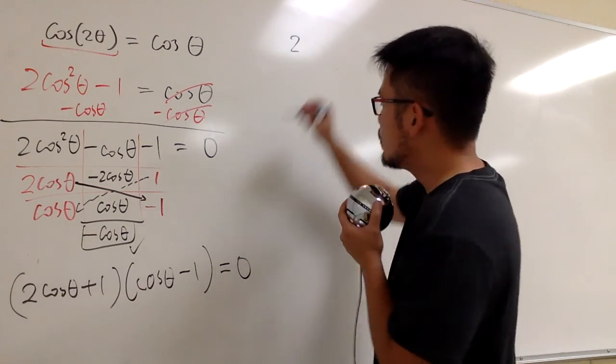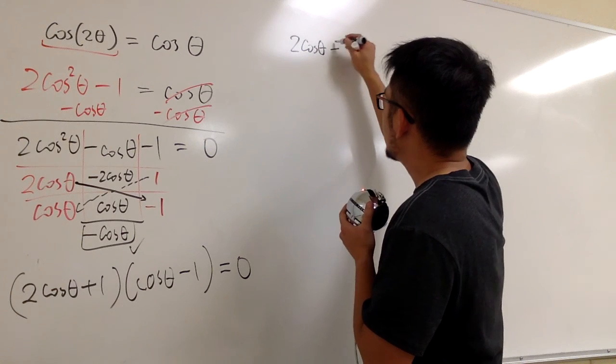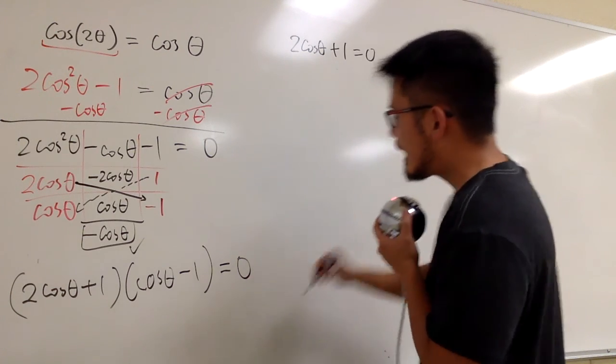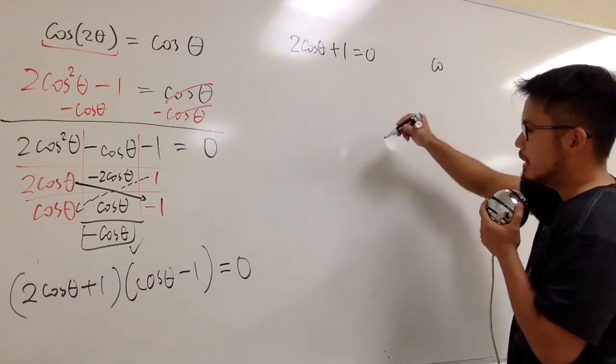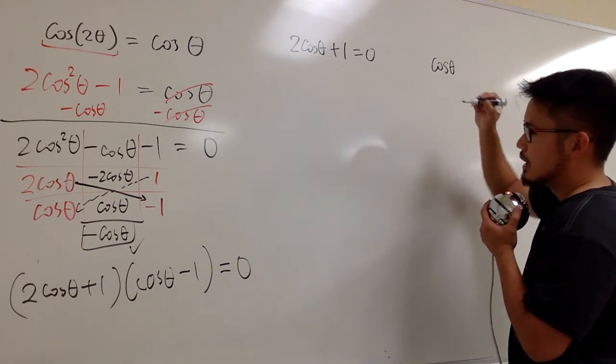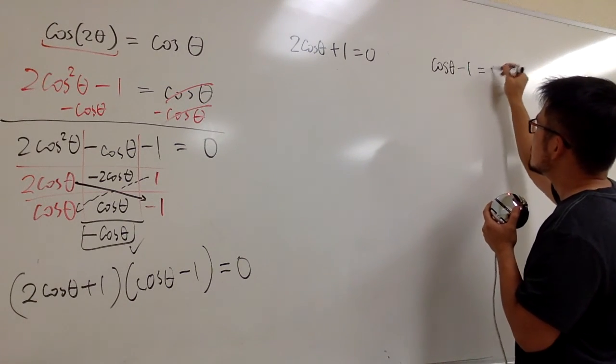So, let's do that first. Let me write it down here. We have to look at 2 cosine θ plus 1 to be 0. And then, the other one. Let me just leave some space. Cosine θ minus 1. This is 0.